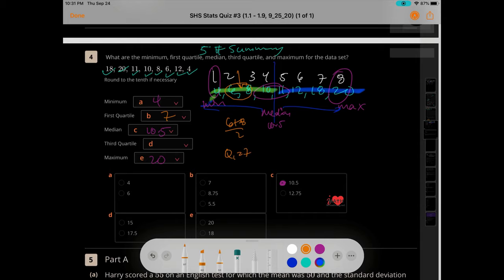And then of the blue highlighted numbers, those four numbers to the right, I'm going to have to take the average here, and that gives me quartile 3 is 15. And so I got 4, 7, 10.5, 15, and 20 as my answer for the drop downs.